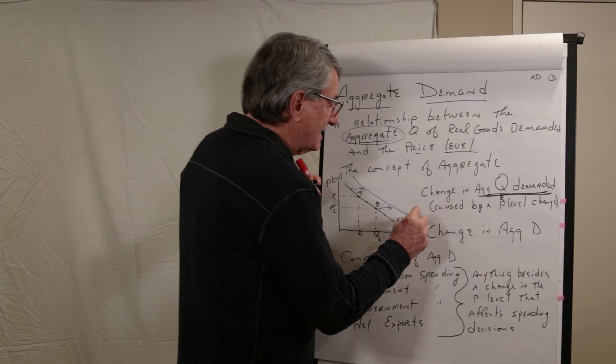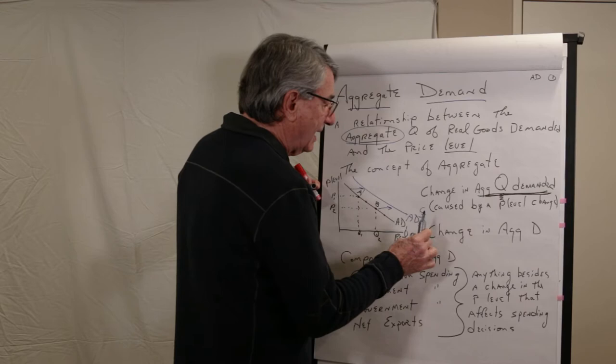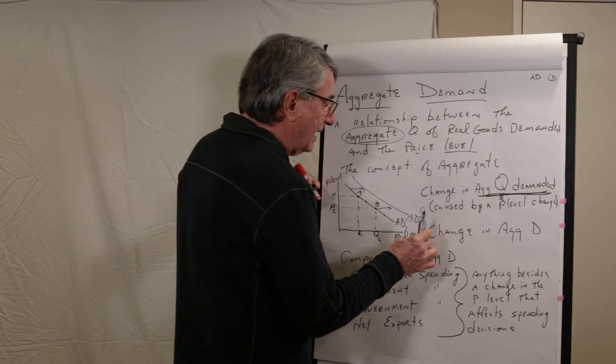The components of aggregate demand are four. They're the four types of spending. So this aggregate demand includes all consumption spending, all investment spending, consumption by households, investment spending by businesses, government spending, and net exports.